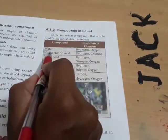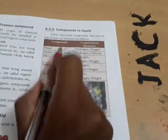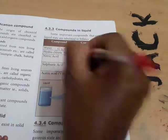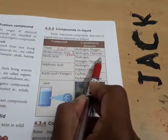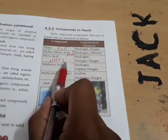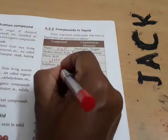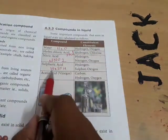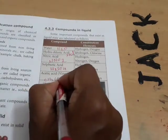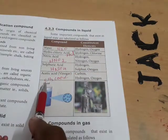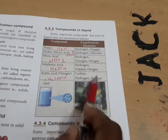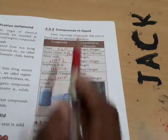Now we will see compounds in the liquid state. Water has the formula H2O, containing hydrogen and oxygen. Hydrochloric acid is HCl (hydrogen and chlorine). Nitric acid is HNO3 (hydrogen, nitrogen, and oxygen). Sulfuric acid is H2SO4 (hydrogen, sulfur, and oxygen). Acetic acid has the formula CH3COOH, containing carbon, hydrogen, and oxygen.